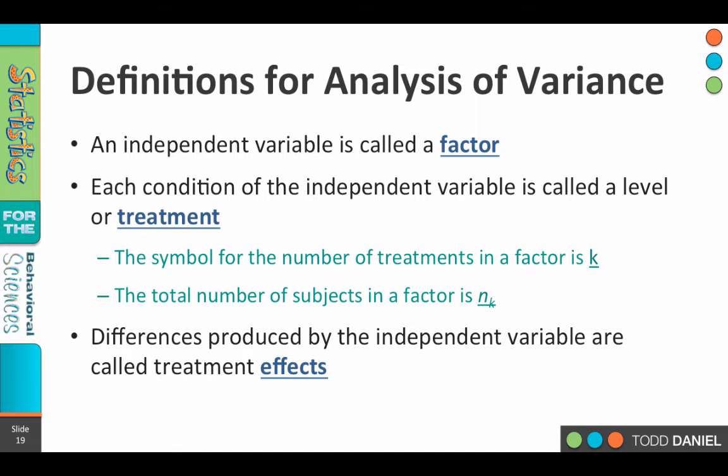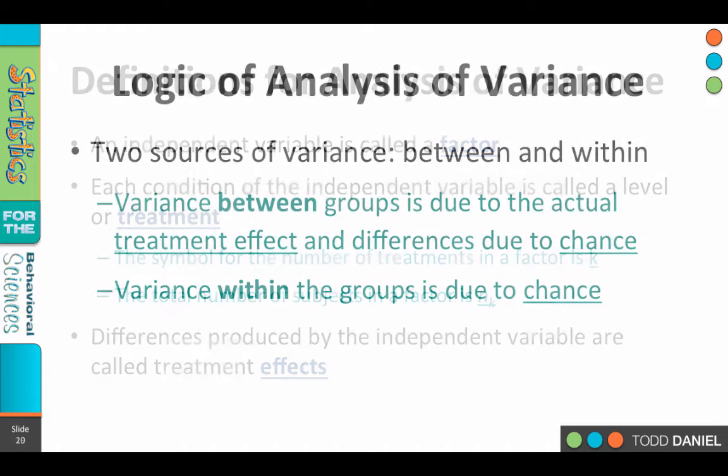So let's say that we're doing something that revolves around a weight loss technique. The factor could be weight loss, and the levels could be three or four different types of diets. If there were four diets, then we would have k equal to four — that's the number of treatments, the number of different levels. If there were ten people trying each of the four diets for a total of forty, our n sub k would be ten, and the large uppercase N would be forty. The differences we find in weight loss based upon the type of diet would be called effects, or sometimes treatment effects.